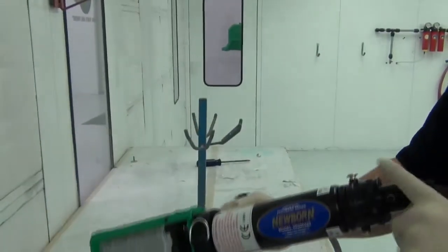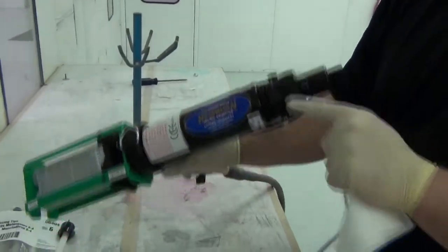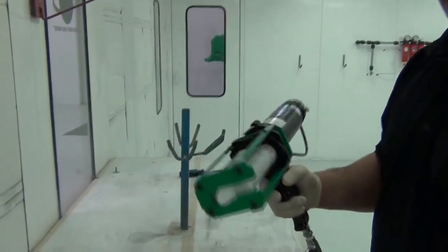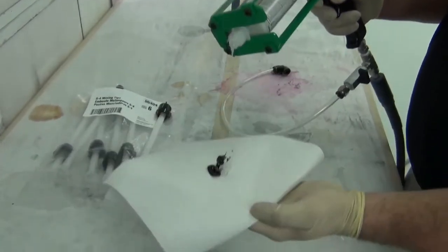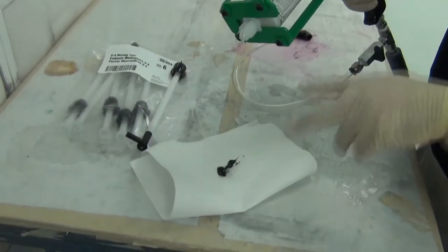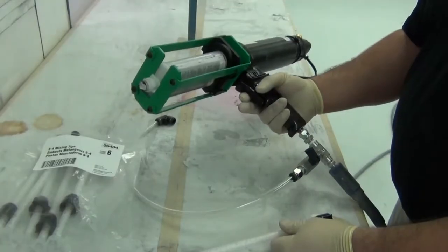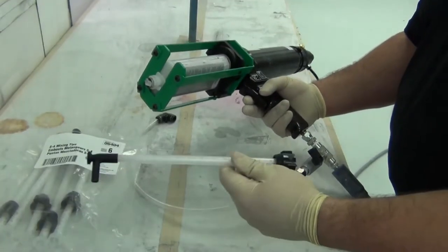Now that the cartridge is loaded, the first thing we'll want to do is move the button back to forward air. Then we'll want to purge a small amount of material out to make sure that both components are equalized. After purging the tube, the next step will be to put on the S4 mixing tip.